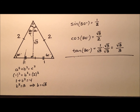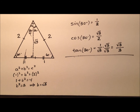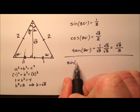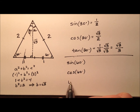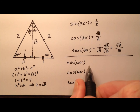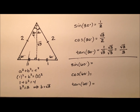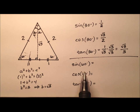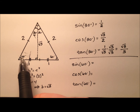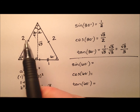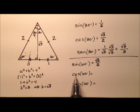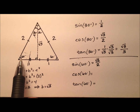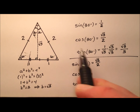Those are the exact values for 30 degrees — sine, cosine, and tangent. Now let's do the sine, cosine, and tangent of 60 degrees. Using the 60 degree angle at the bottom, sine is opposite over hypotenuse: the opposite side is the square root of three and the hypotenuse is two, so sine of 60 is radical three over two. The cosine of 60 is adjacent over hypotenuse, giving us one over two.